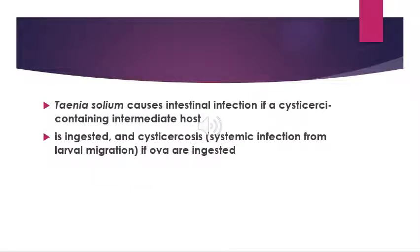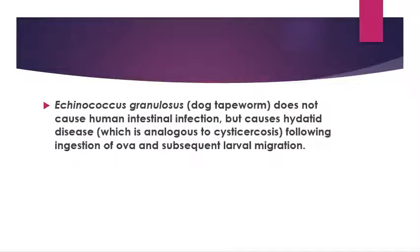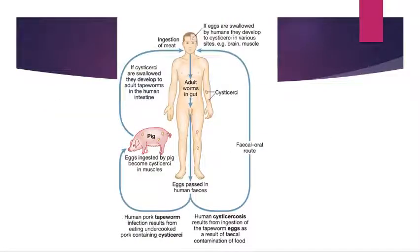Taenia saginata occurs worldwide but is most common in areas where consumption of undercooked beef is customary, such as Europe and parts of Asia. Most human carriers of adult tapeworms are asymptomatic. Associated symptoms may include nausea, anorexia, epigastric pain, and peripheral eosinophilia. Diagnosis is usually established by identifying eggs or proglottids in the stool.